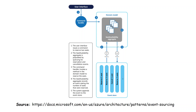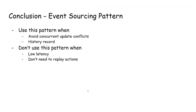The system then appends the event to the event store. Because events are immutable and cannot be changed, there will be no concurrent conflicts with users trying to modify state at the same time. In conclusion, the event sourcing pattern is very useful — we should consider it when we want to avoid concurrent update conflicts.